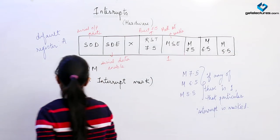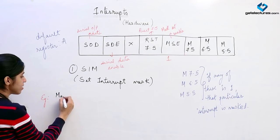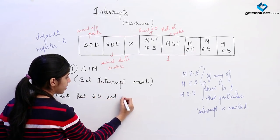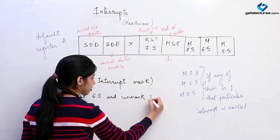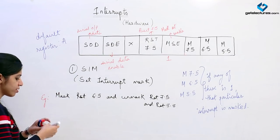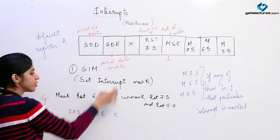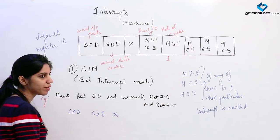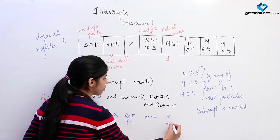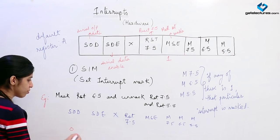Let us look at an example. Suppose you are asked to mask RST 6.5 and leave RST 7.5 and RST 5.5 unmasked. First, let us determine the accumulator status. SOD = 0, STE = 0, don't-care = 0. We do not want to reset 7.5 flip-flop, so that bit is 0. We want to mask, so MSE = 1. M7.5 = 0, M6.5 = 1, M5.5 = 0.